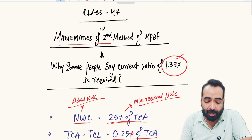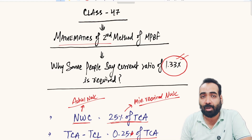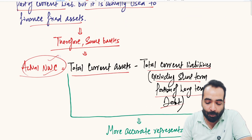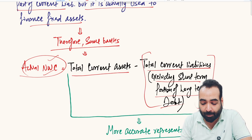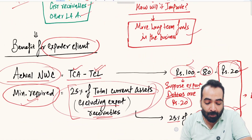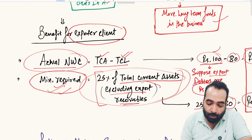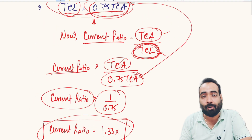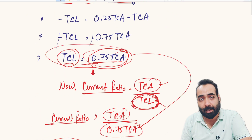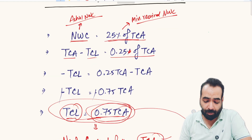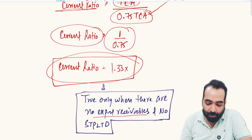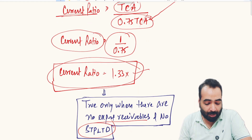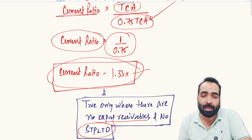However, this is not strictly always true. As learned in the previous video, the actual NWC calculation can be amended per the bank's requirements, and the minimum required NWC can exclude export receivables. Because of these adjustments — export receivables and the short-term portion of long-term debt — this theory may not hold if the bank treats these items separately. I hope you enjoyed this video; I'll cover the next topic in the next video. Thank you.